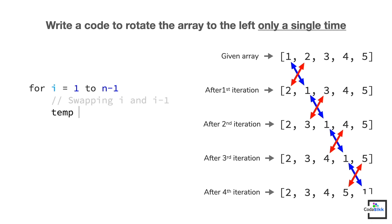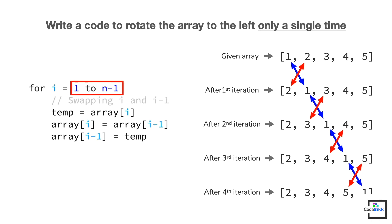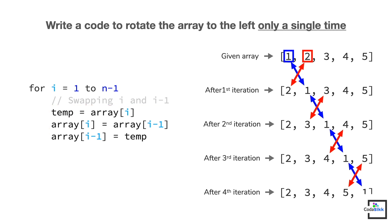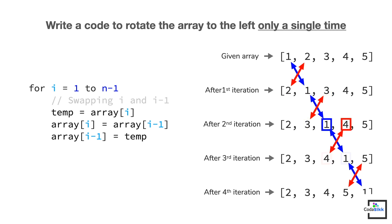Run a loop from index 1 to index n minus 1 and swap the elements at index i and i minus 1 during each iteration. In the first iteration, elements at index 0 and 1 will swap their values. In the second iteration, elements at index 1 and 2 will swap, and so on. After the last iteration, the first element will have reached the last position in the array, and one left rotation will be complete.